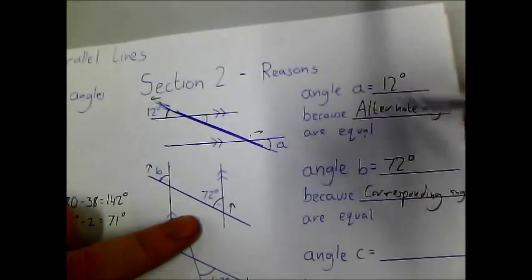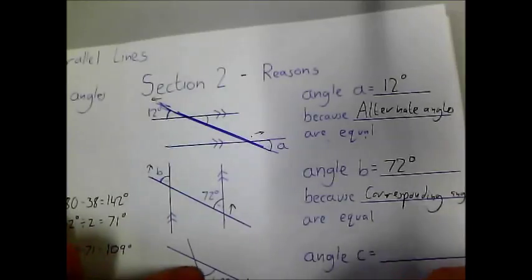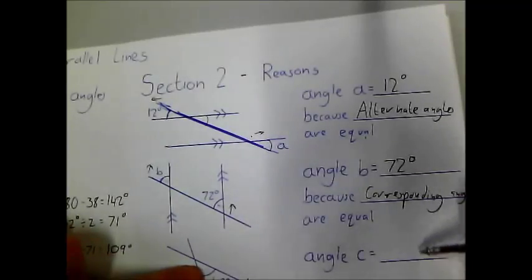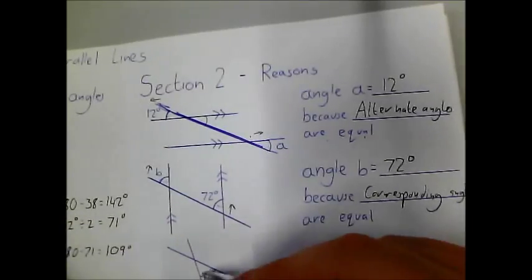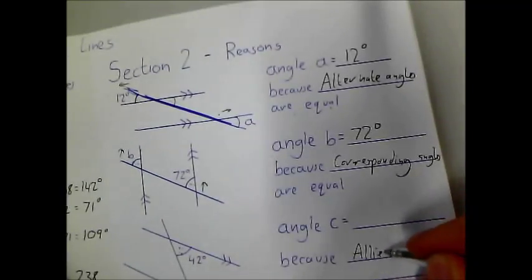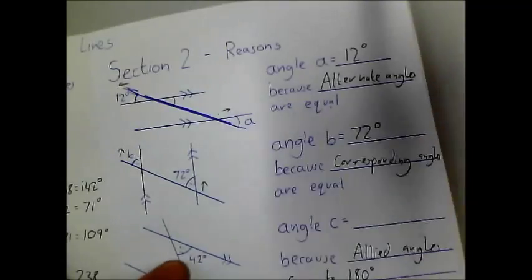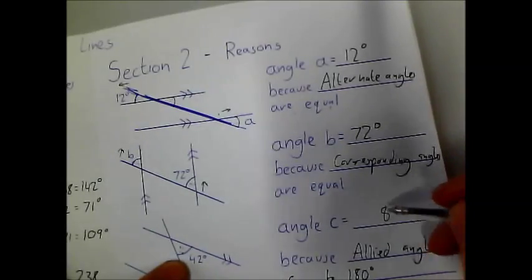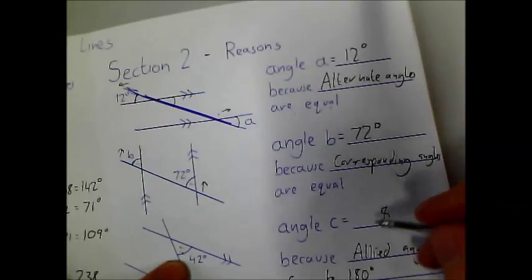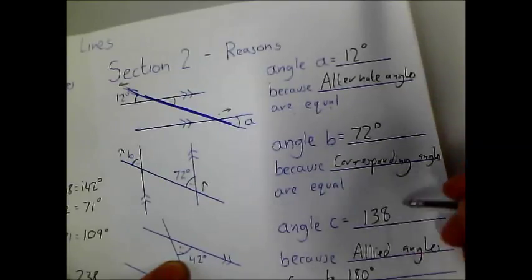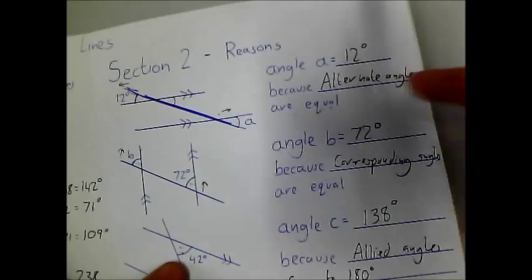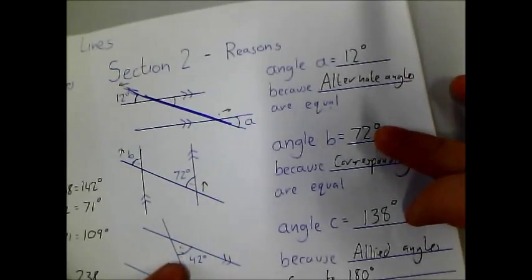You must always give this full explanation. And finally, angle C is not 42 degrees. These are allied angles. Allied angles sum to 180 degrees. So this one will be 8 to get to 50, 30 to get to 80 — 138 degrees. And that's the first three questions for section two done.